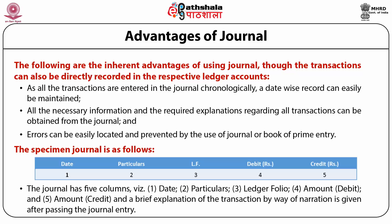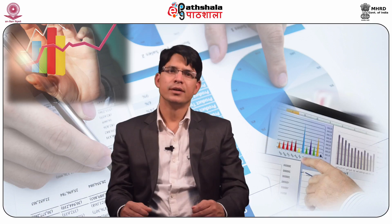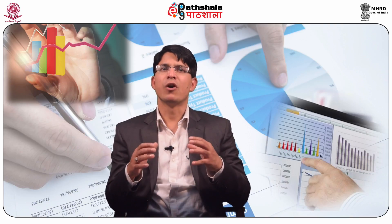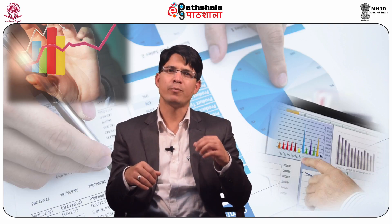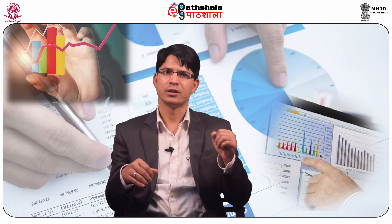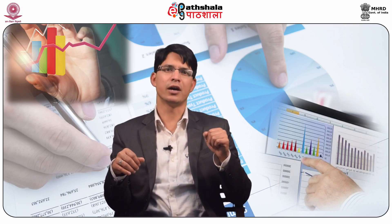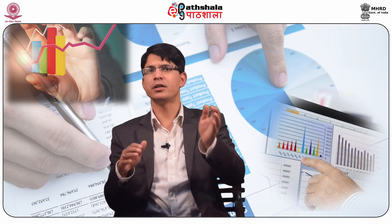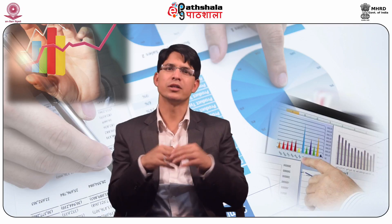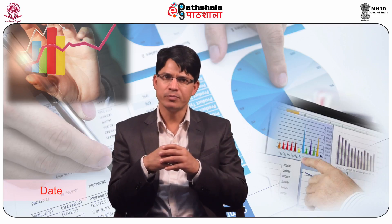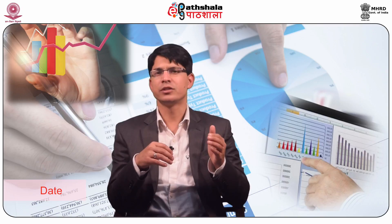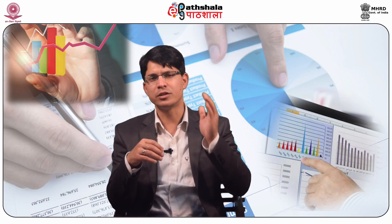A brief explanation of the transaction by way of narration is given after passing the journal entry. In the date column, at the top of each page, the year is written, and in the next line, the month and date of first entry are written. The year and month need not be repeated until a new page has begun or the month or the year changes. Thus, in this column, the date on which the transaction takes place is written only.